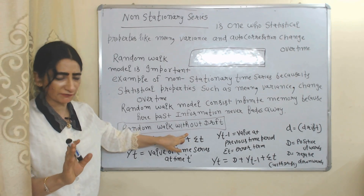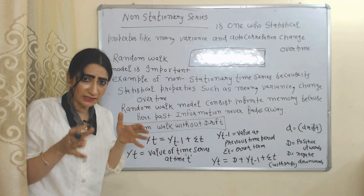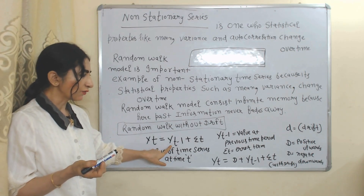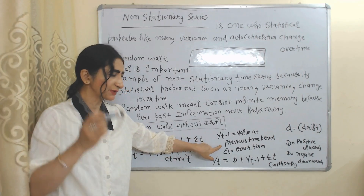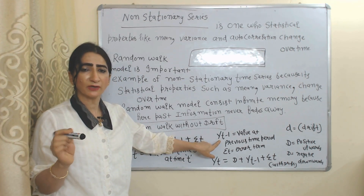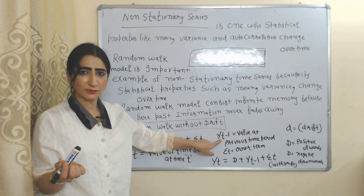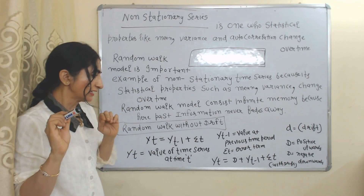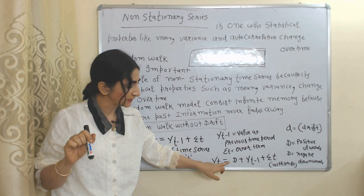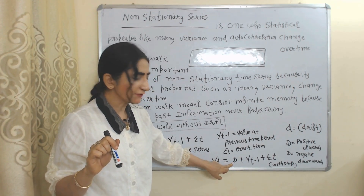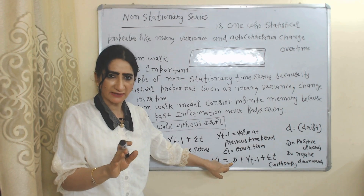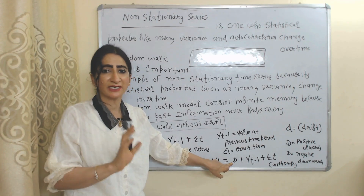We can present the random walk model in two ways: first is the random walk model without drift, and second is the random walk model with drift. In the without-drift model, yt is the value of the time series at time t, and yt minus one is the value at the previous time period, plus an error term. In the with-drift model, d represents the drift — if drift is positive the model shows an upward trend, and if drift is negative the model shows a downward trend.